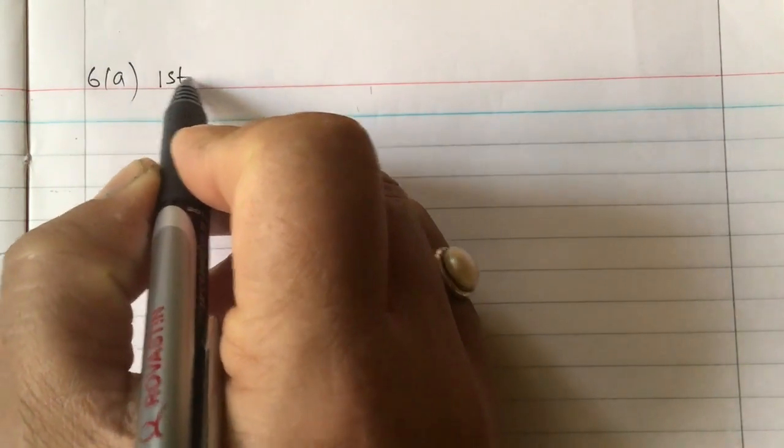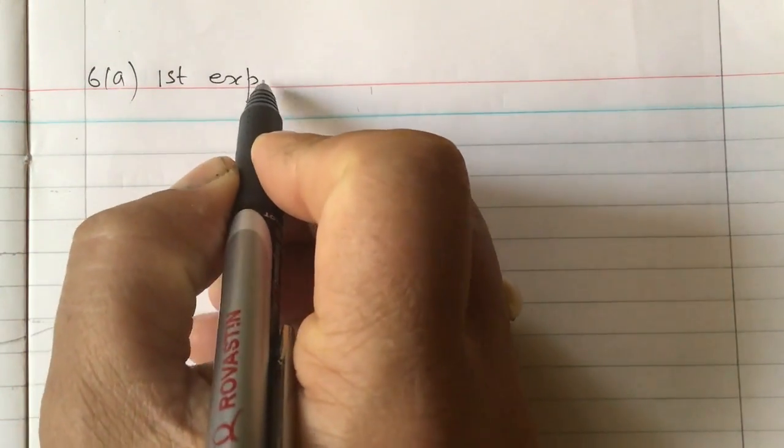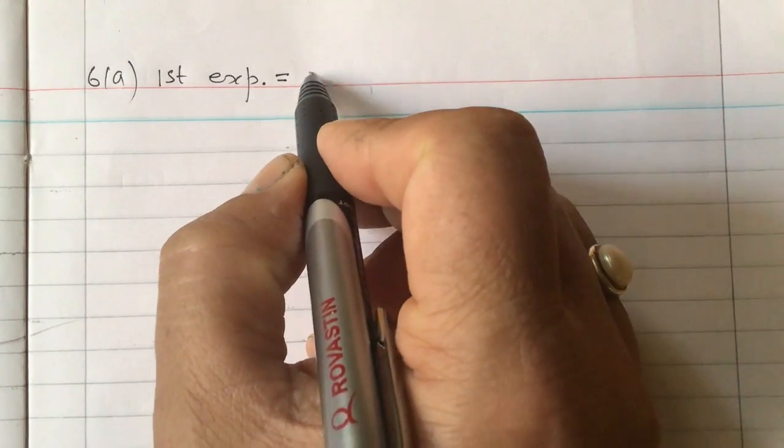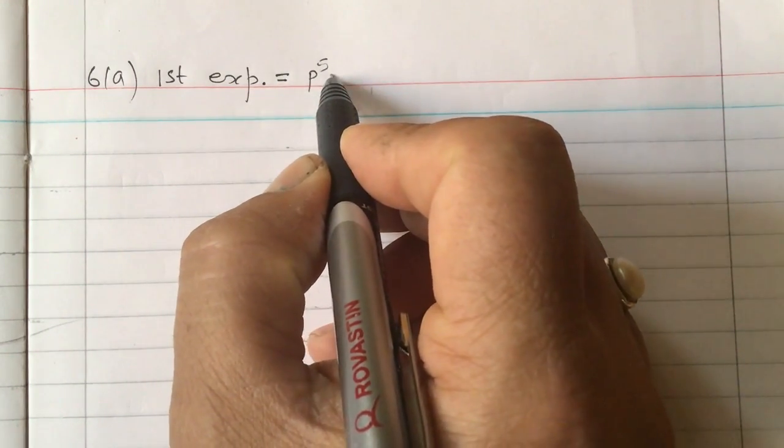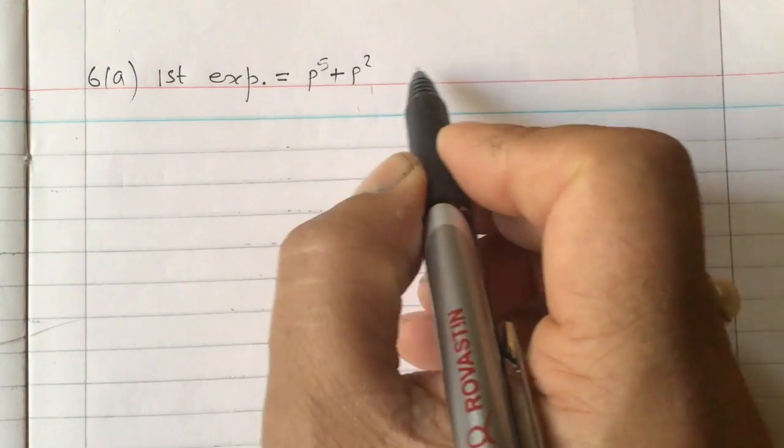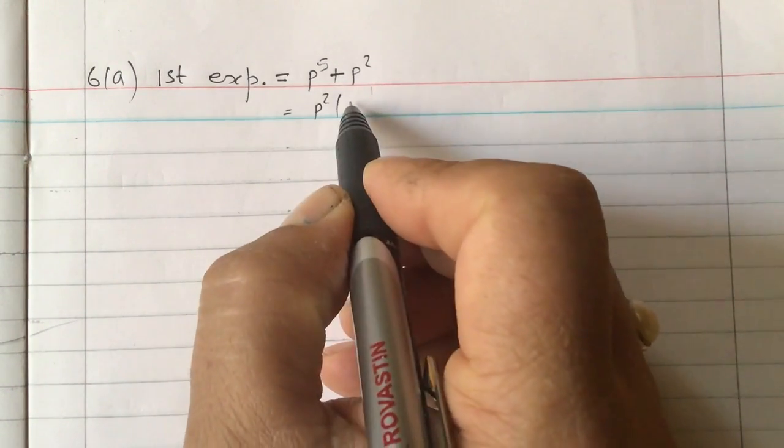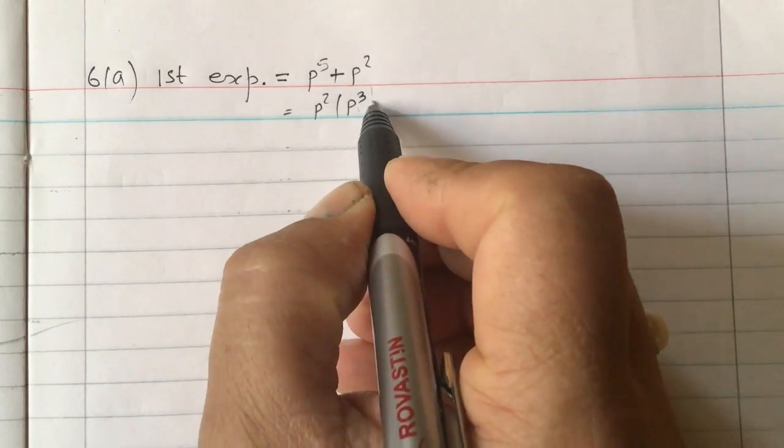Our solution here, the first expression is p to the power 5 plus p square. So we can take p square common, if you take p square common you will get p cube plus 1.